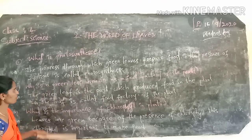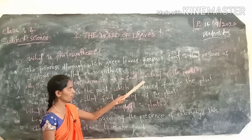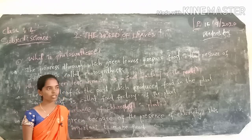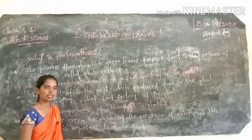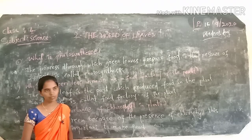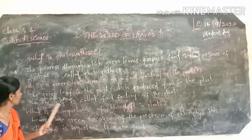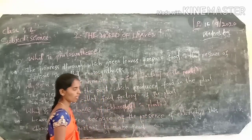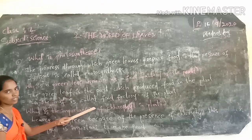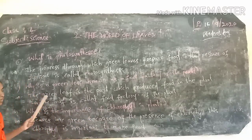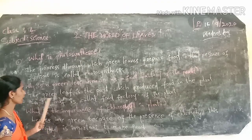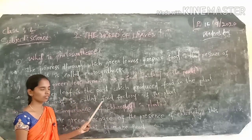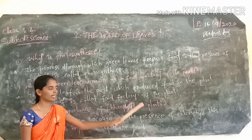Second question: Why is a leaf known as a food factory of the plant? The green leaf is the part which produces food in the plant, so the leaf is called the food factory of the plant.